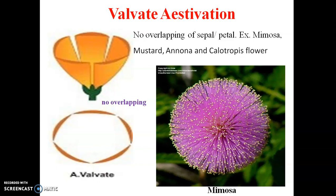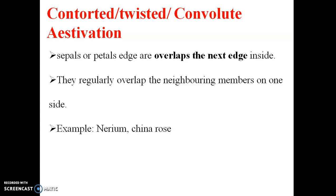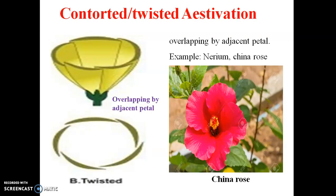Examples of valvate estivation include Mimosa, Mustard, Annona, and Calotropis flowers. The second type is Contorted, Twisted, or Convoluted estivation. In this type, the edges of each sepal or petal overlap with those of the adjacent one — one side is always on the outside and the other side is always inside, so the arrangement is twisted. An example is China rose.